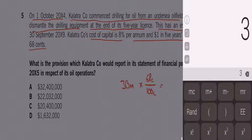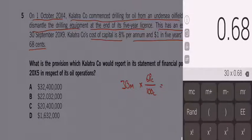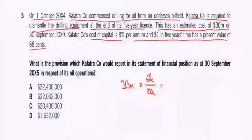So, 30 times by 0.68, we'd have it in at 20.4 million. At 20.4, what you would do: you'd debit PPE and you would credit a liability.